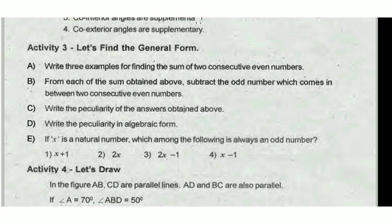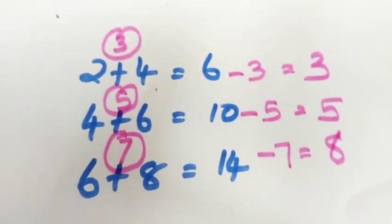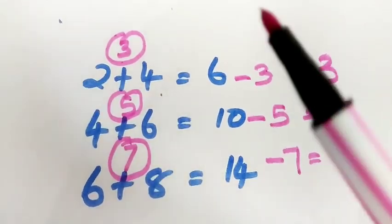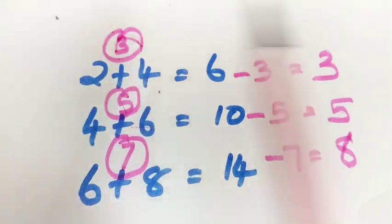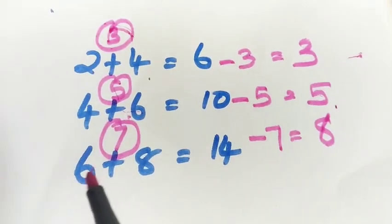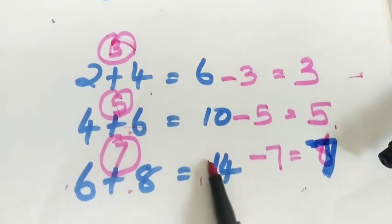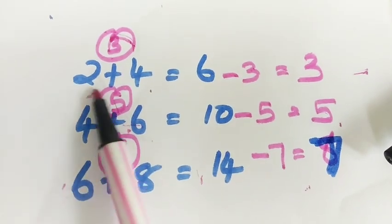Notice the peculiarity of the answers obtained above. We can see the answer is 3, then 5, then 7 — each answer is an odd number.